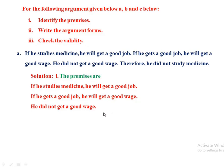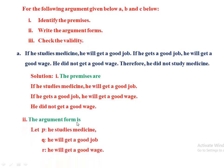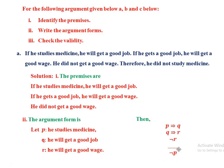We write the argument form by symbolizing the statements. Let P = 'he studies medicine,' Q = 'he will get a good job,' R = 'he will get a good wage.' The argument form becomes: P implies Q, Q implies R, negation R as premises, and negation P as the conclusion.